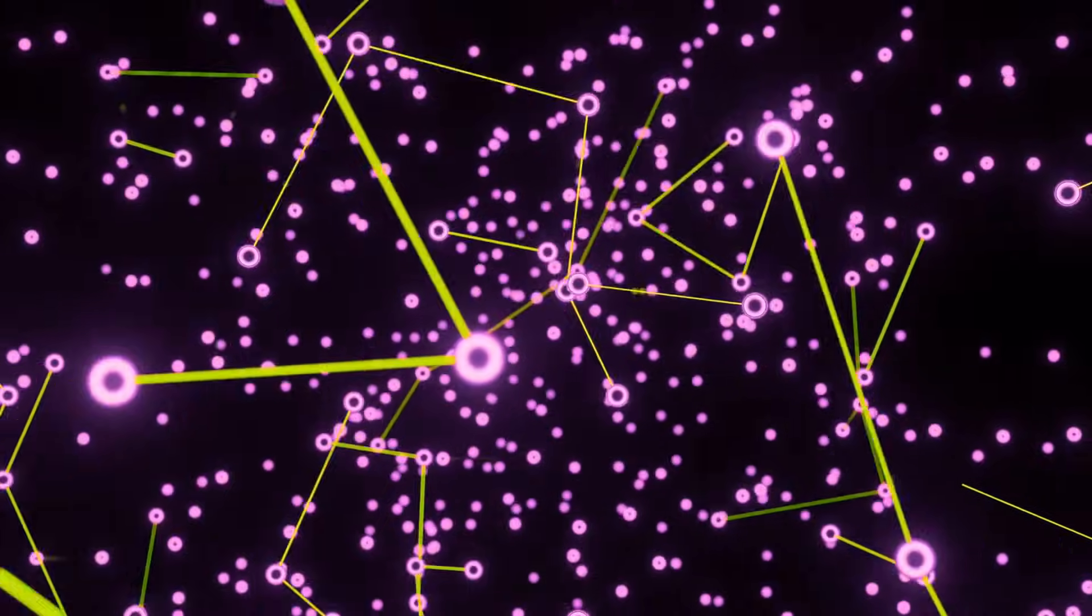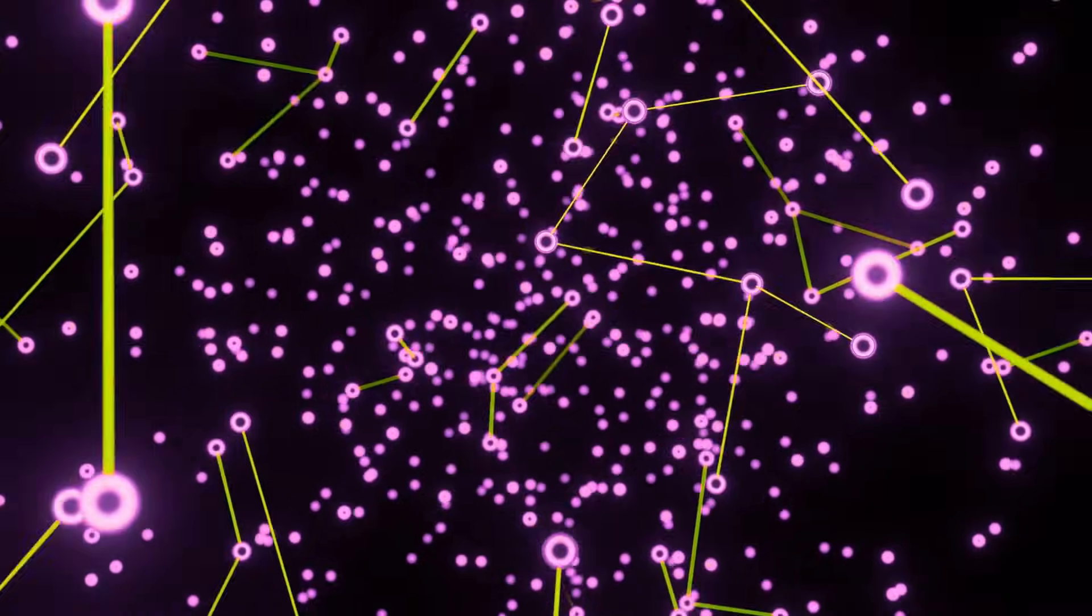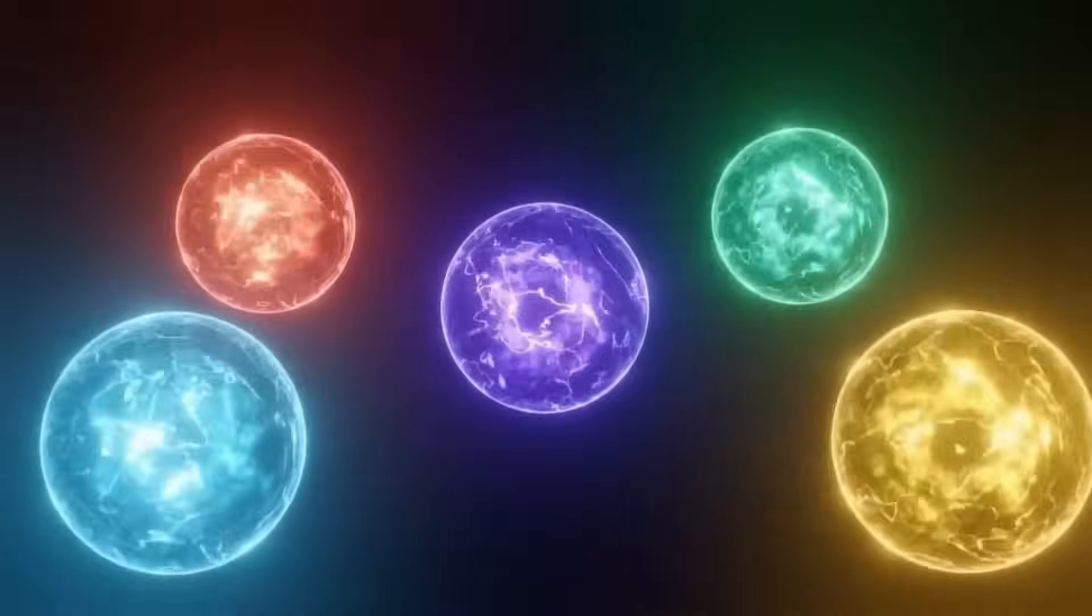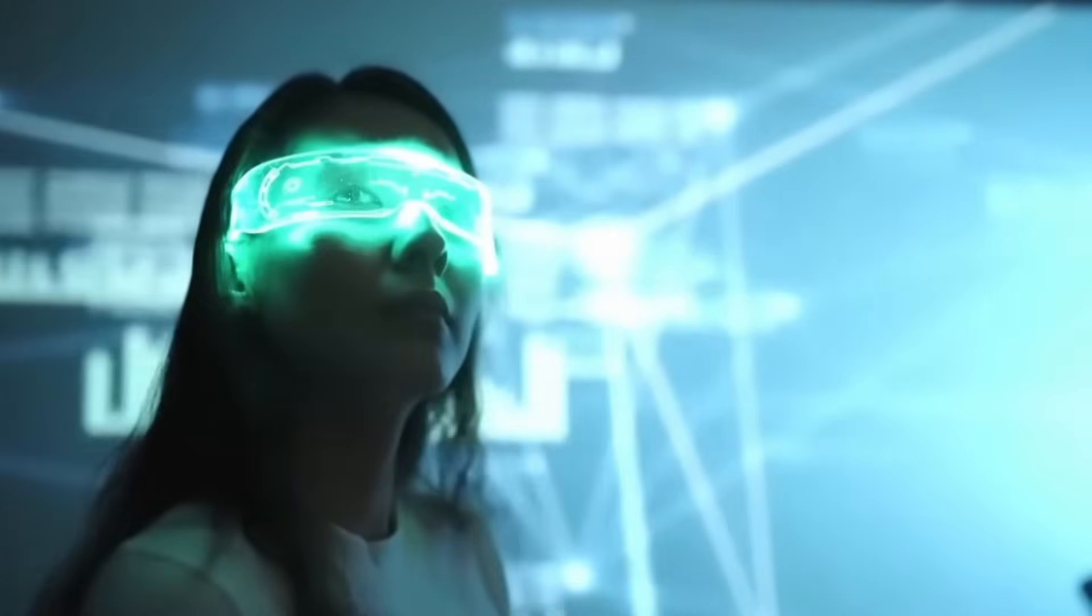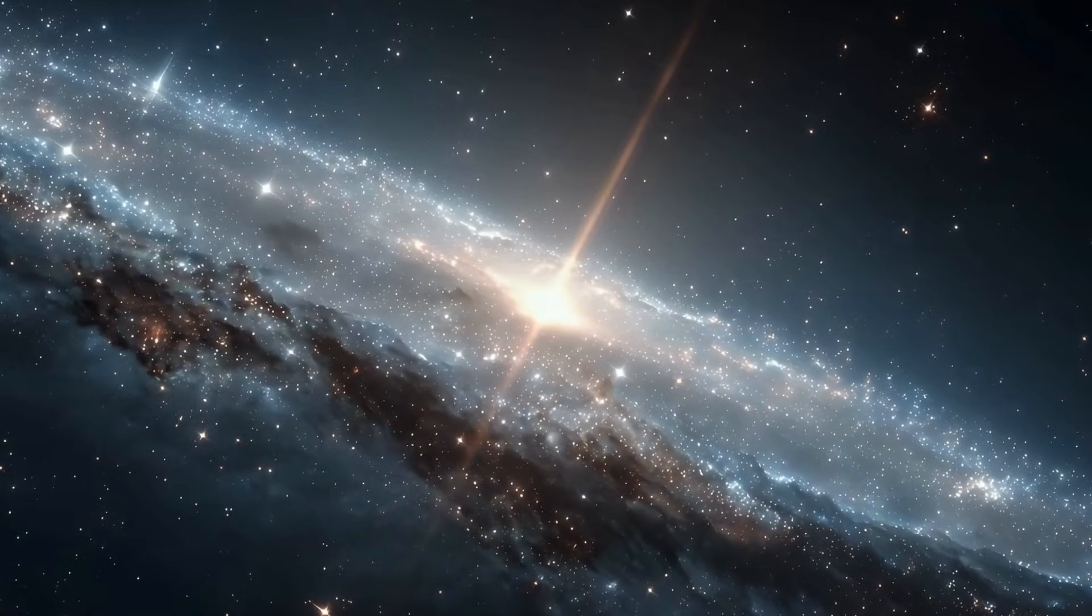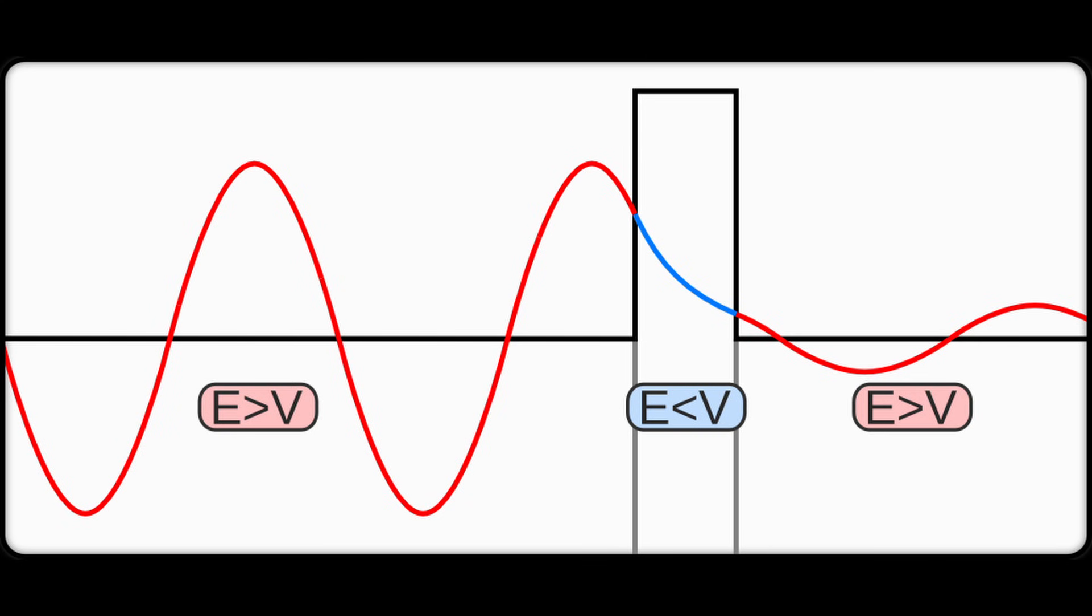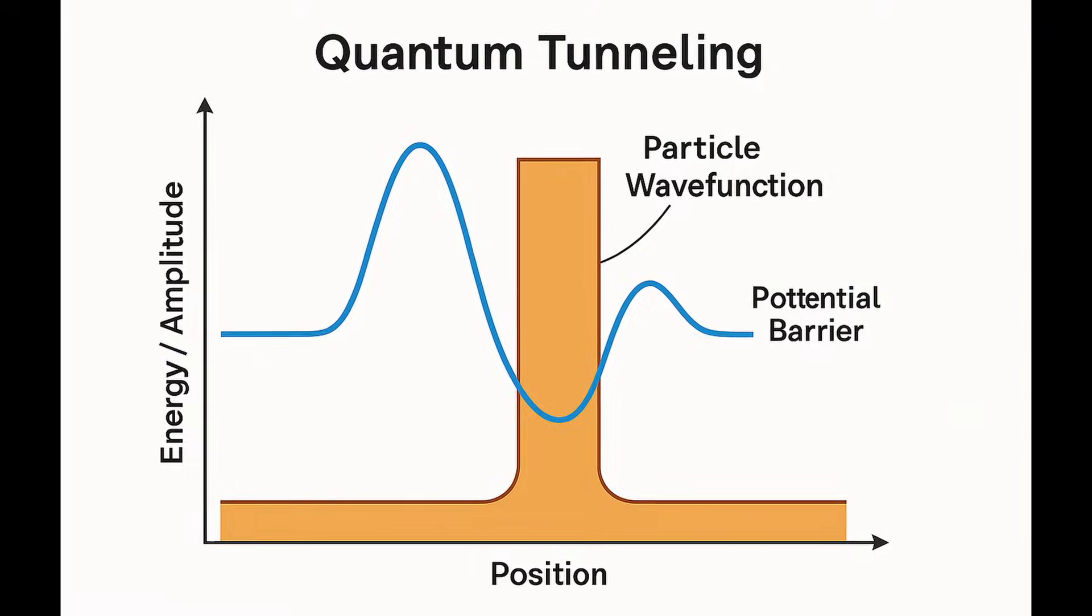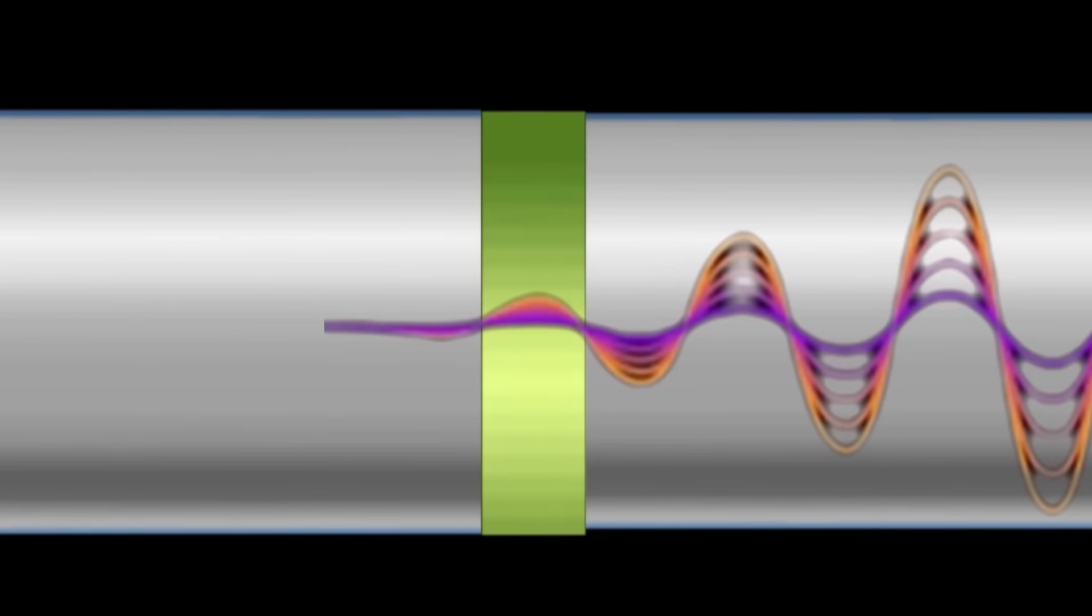Before the experiments, quantum mechanics seemed like the private language of the microscope. Humans could observe it, but never enter it. The Nobel Prize winners proved something deeper. The divide between quantum and classical physics isn't real. There is no boundary, no size limit, no special threshold where quantum rules stop working. The only thing that ever hid quantum behavior was noise, heat, vibration, electrical interference. Once we learned to control that noise, the quantum world revealed itself, everywhere.